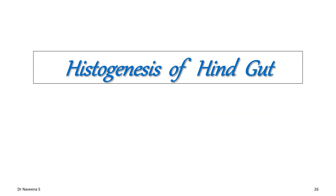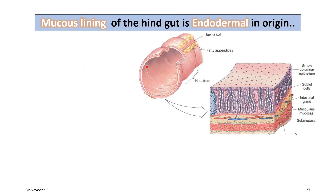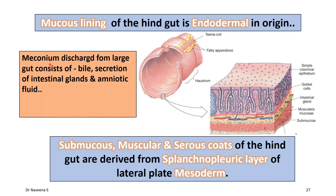Regarding the histogenesis of the hindgut: histologically, only the mucous lining of the hindgut is derived from endoderm, whereas the other layers — submucous, muscular, and serous coats — are derived from the splanchnopleuric layer of lateral plate mesoderm. Meconium discharged from the large gut can occasionally be swallowed by the fetus as it starts functioning before birth itself.